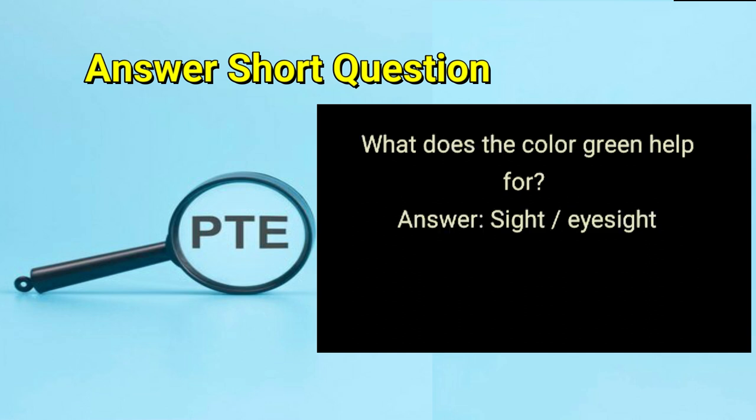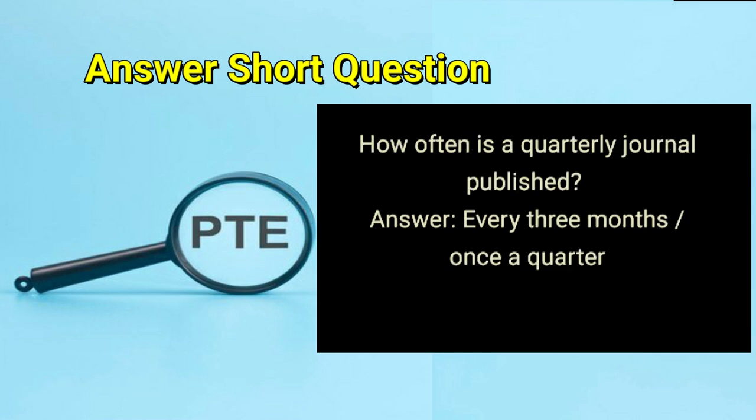What does the color green help for? Answer: sight or eyesight. How often is a quarterly journal published? Answer: every three months, or once a quarter.